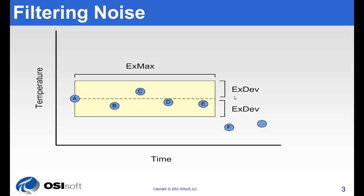We do that with two settings: with exception deviation, which defines the width of this dead band, and with exception maximum, which defines the maximum length of time to go before reporting a new value.